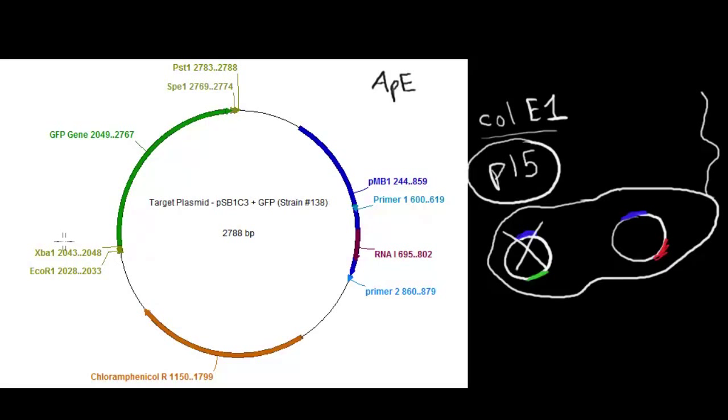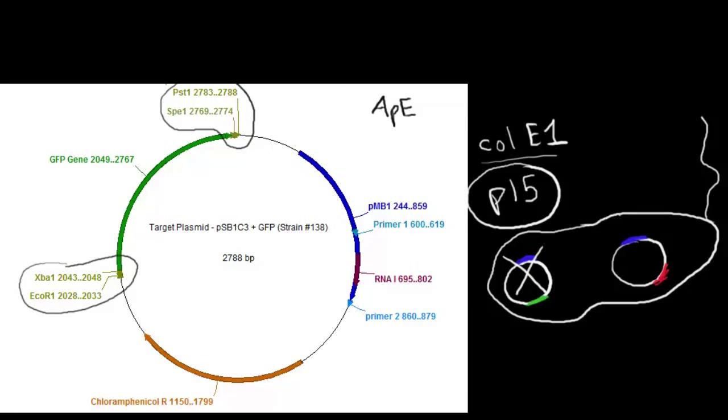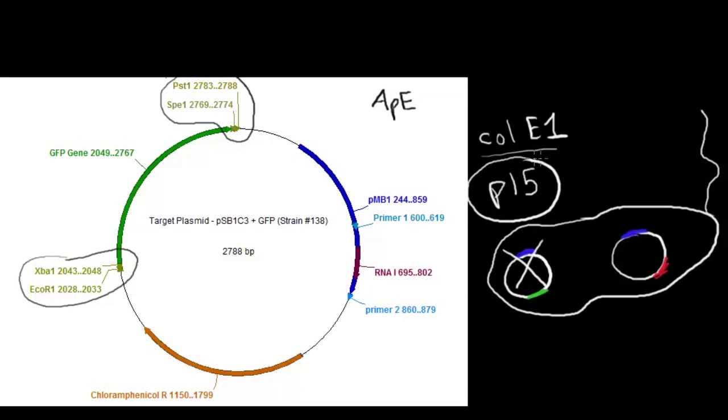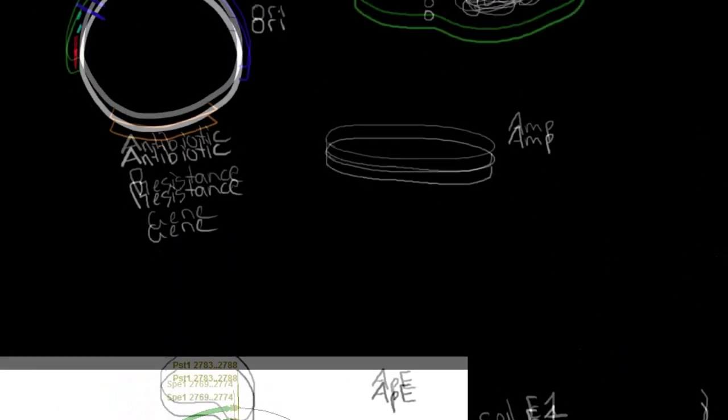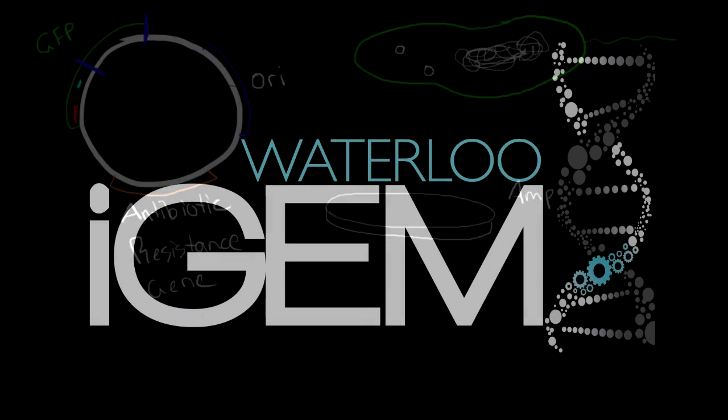And of course this guy is flanked by our iGEM restriction sites. And we'll get to those in a later video. But those are very important for iGEM work. Anyway, so that's I think a good place to stop. A good little summary of what a plasmid is and how we use it in the cell.